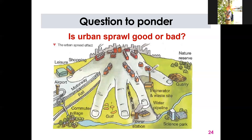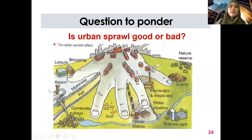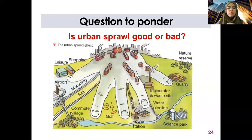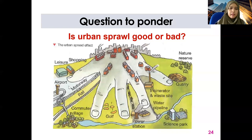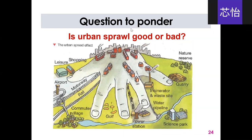Johor Premium Outlet. There's a connection between Senai airport and JPO — there's a direct bus; you step out of the plane, take the bus, and it takes you directly to JPO. After JPO, we had the Genting Premium Outlet, and also the one in Taiping — premium outlets as well. We have motorways, the toll roads, and we also have rail — LRT, MRT, commuter.